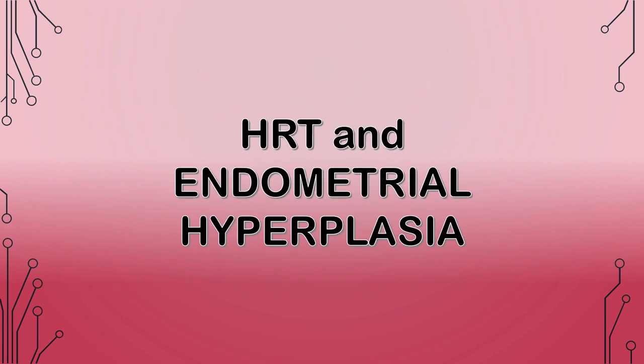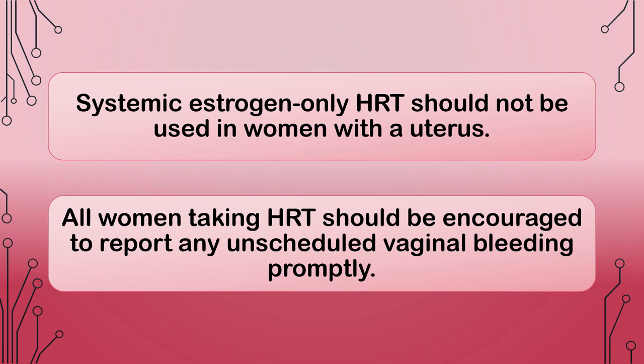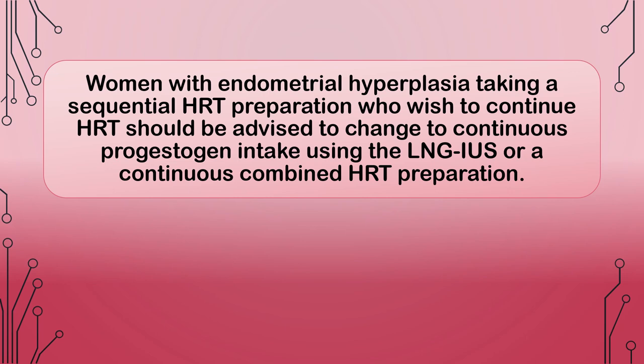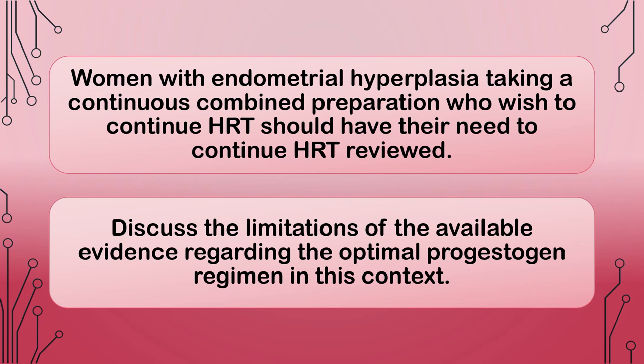HRT and endometrial hyperplasia: Systemic estrogen-only hormone replacement therapy should not be used in women with a uterus. All women taking HRT should be encouraged to report any unscheduled vaginal bleeding promptly. Women with endometrial hyperplasia taking a sequential HRT preparation who wish to continue HRT should be advised to change to continuous progestogen intake using the LNG-IUS or a continuous combined HRT preparation. Women with endometrial hyperplasia taking a continuous combined preparation who wish to continue HRT should have their need to continue HRT reviewed. Discuss the limitations of the available evidence regarding the optimal progestogen regimen in this context.